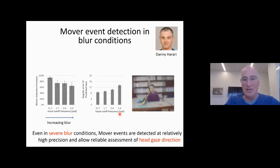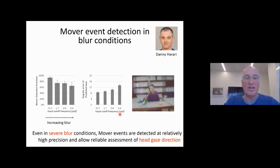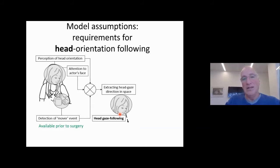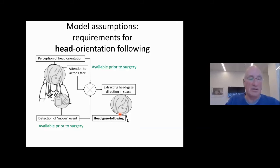One is able to extract gaze direction based on head information, even in severe blur conditions that exist even prior to surgery. Regarding the model: head orientation following can be learned prior to surgery, at least from the model, based on the information available before surgery. But eye gaze following — telling where someone is looking based on their eye direction — is not available prior to surgery due to their blur conditions.